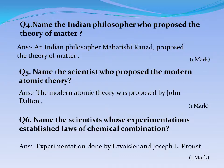Question No. 6: Name the scientist whose experimentations established laws of chemical combination. Answer: Experimentation done by Lavoisier and Joseph L. Proust.